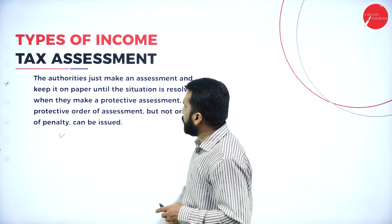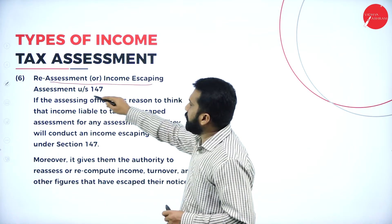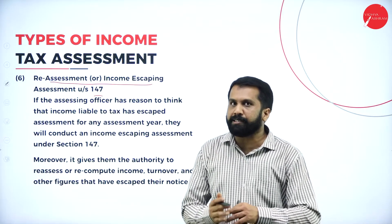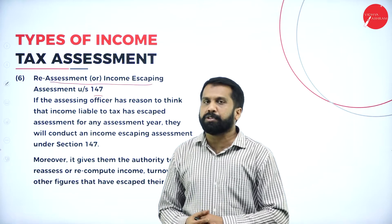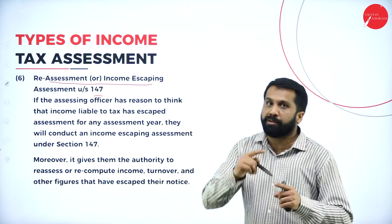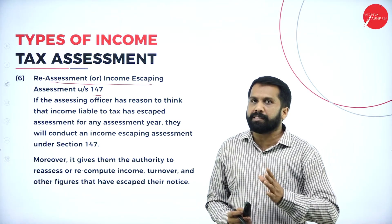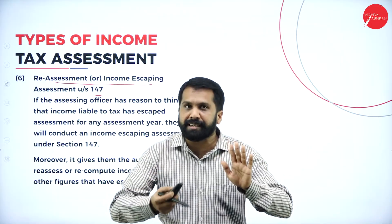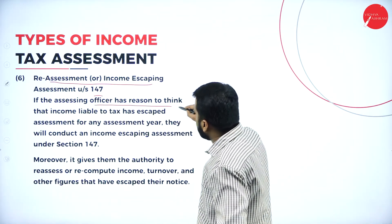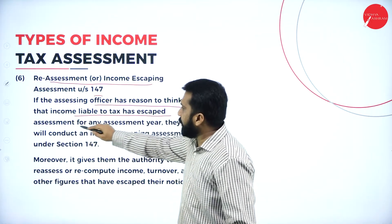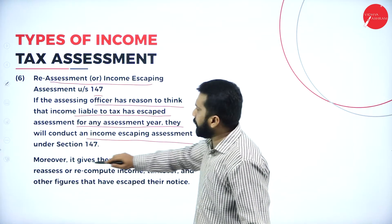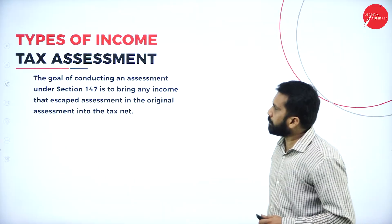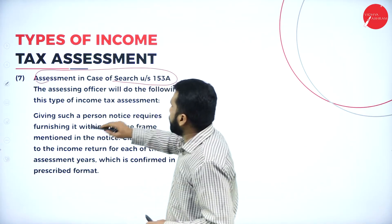Reassessment is straightforward. You have done an assessment and later you feel that it was wrong and needs to be corrected. Certain charges apply; if you pay those charges, you will be given permission to reassess. For example, by mistake instead of paying 40,000 tax you paid only 30,000 and showed less income — you can apply to the income tax office to reassess. If the assessing officer has reason to believe that income liable to tax has escaped assessment, they will conduct an income-escaping assessment and give you a chance to do reassessment.